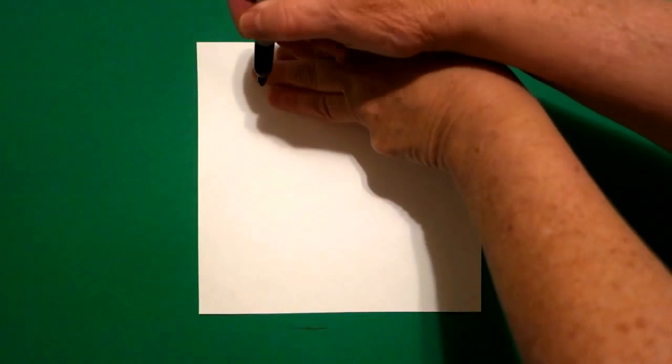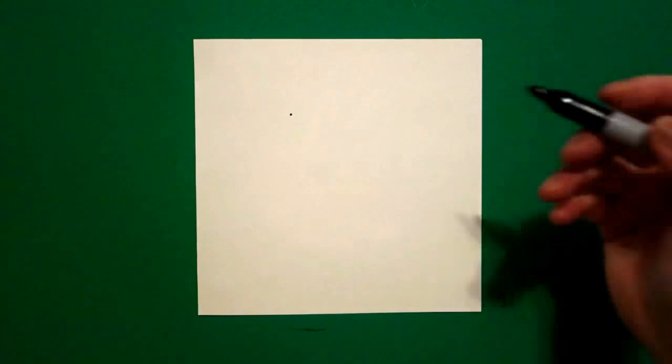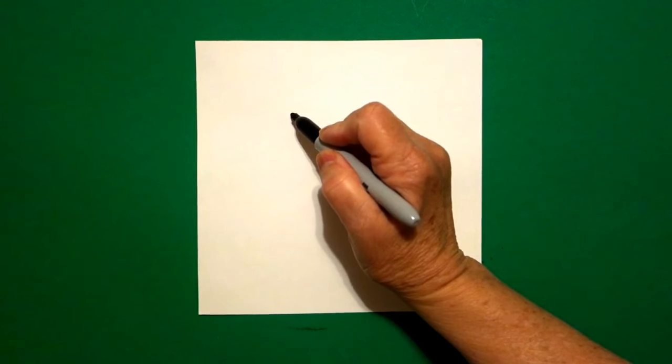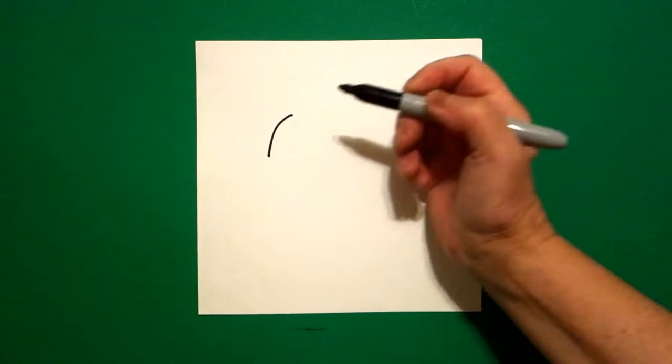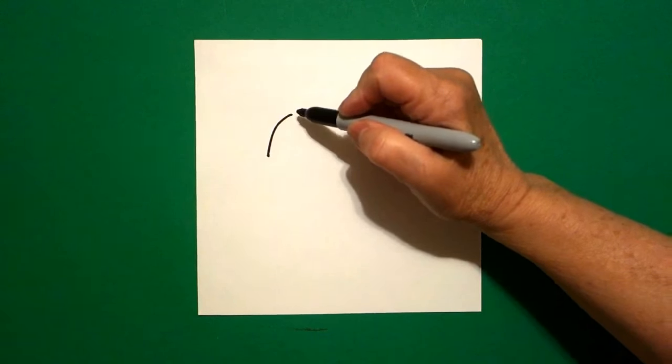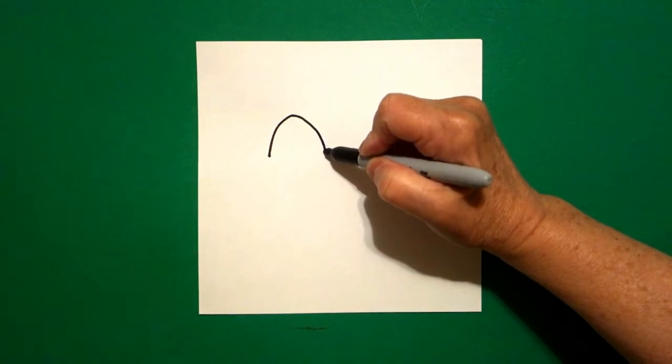I take three fingers kind of over towards the left and underneath I put a dot. From that dot going towards the left, I draw a curve line down, stop, come back to the dot, draw another curve line down, stop.